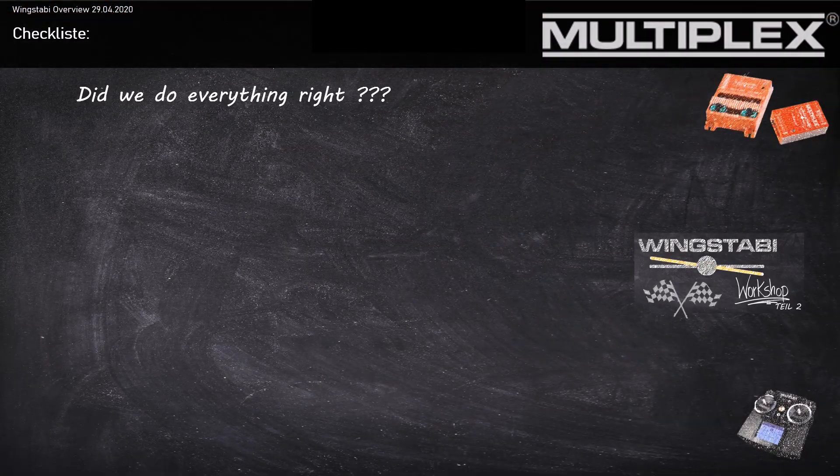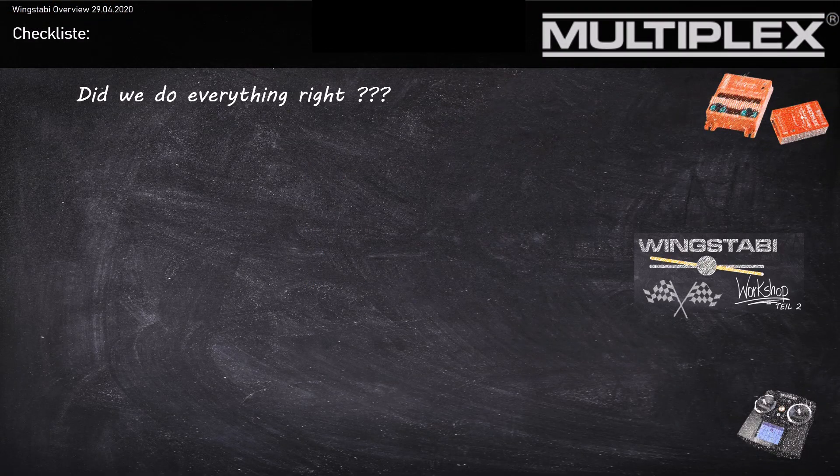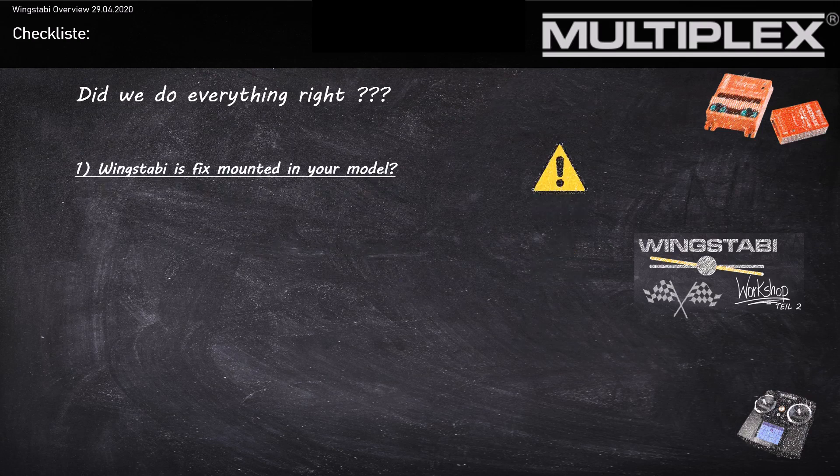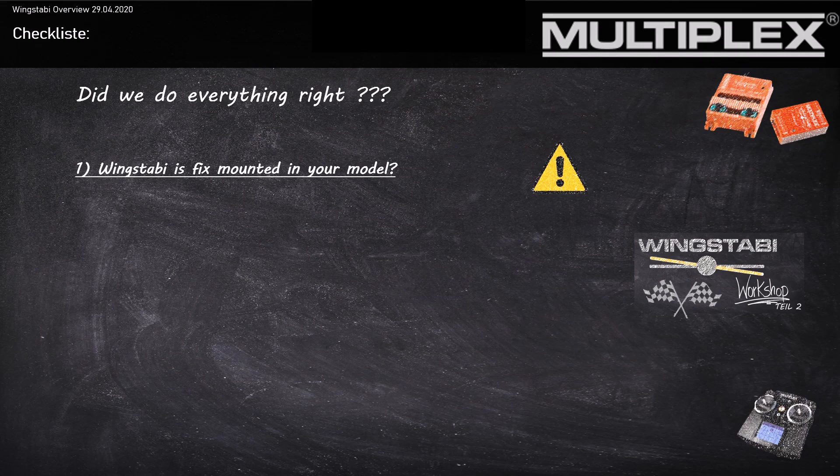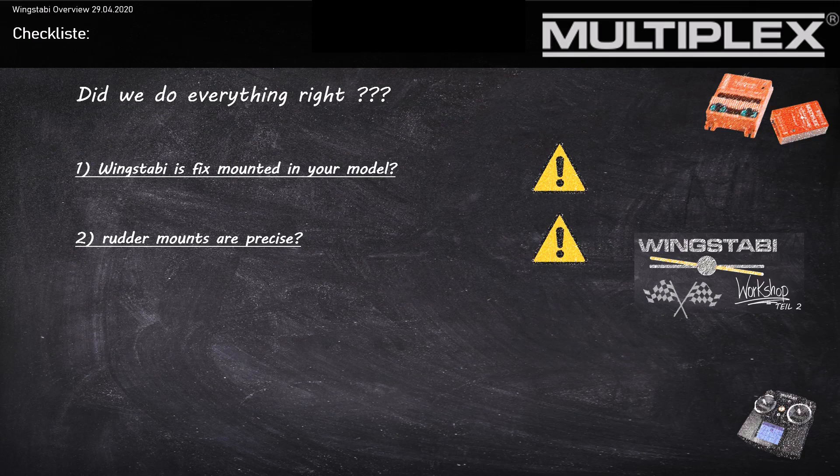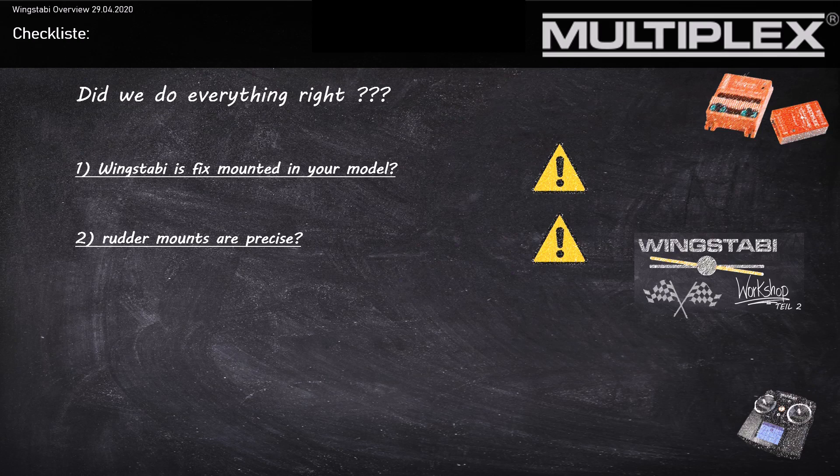Let's get to the home stretch of our Wing Stubby Workshop. Sure, you will ask yourself, did I make everything correctly? If you can answer the following 4 points with yes, you are on the safe side. Point 1: Is your Wing Stubby installed fixed in your aircraft so that it cannot become loose during flight? This is very important. Point 2: Are your linkages for your rudders free of clearance? This is important so that the Wing Stubby can work correctly.